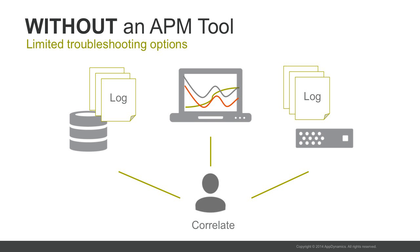Without an APM tool, you have other sources of data: core dumps, hardware monitoring tools, network monitoring tools, and log files. But mining for the relevant pieces of information in the sea of data depends on you. And critically, you don't have code-level data to discover and isolate code-related problems. Precious time passes while you are manually correlating the data from all these sources. Further, there is no guarantee that you will be successful in replicating the problem in your test environment, which is under less than realistic traffic conditions. Does this sound familiar to you?